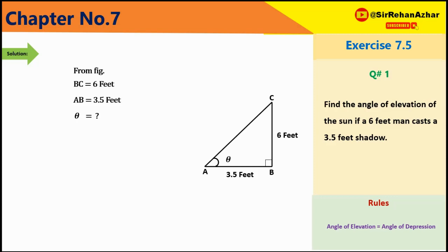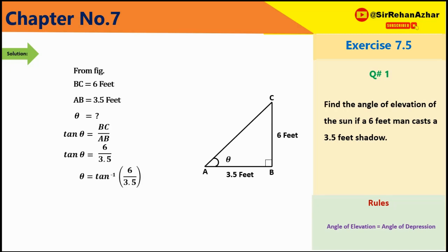BC और AB को theta के respect देखें तो BC है perpendicular और AB है base। दोनों का relation होगा tangent of theta = BC/AB। Tangent of theta = 6/3.5। Theta की value चाहिए तो theta = tangent inverse (6/3.5)।